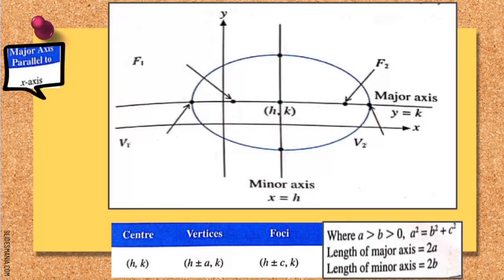Bismillahirrahmanirrahim. Assalamualaikum warahmatullahi wabarakatuh. This is a second video which will explain the equation of an ellipse. Let us go to the first type of ellipse, which is an ellipse with the major axis parallel to the x-axis.